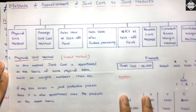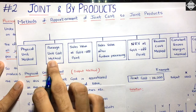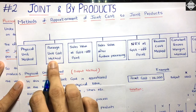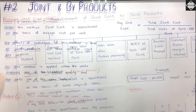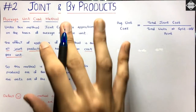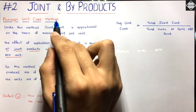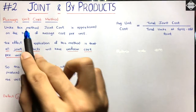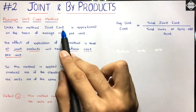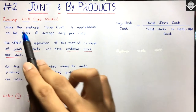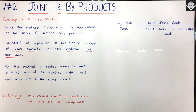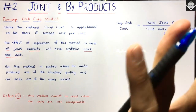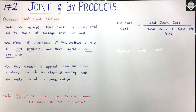In this video we are going to cover the Average Unit Cost Method. It's a simple method. Under this method, joint cost is apportioned on the basis of average cost per unit. What you have to do is calculate the simple average unit cost.